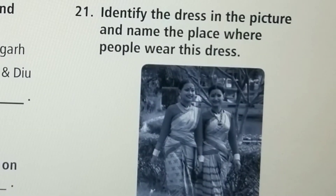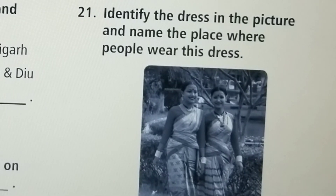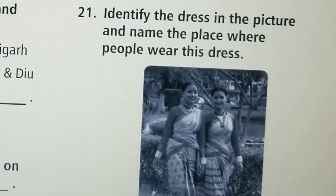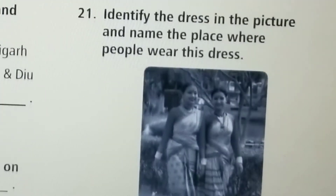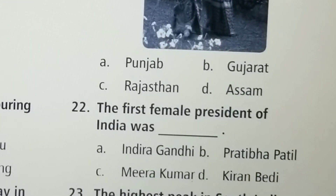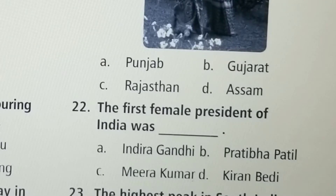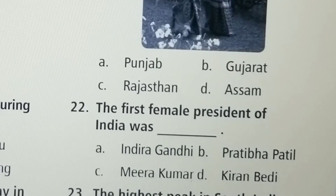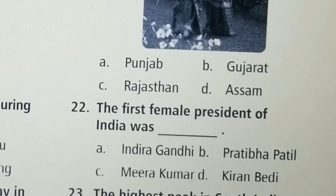Next question: Identify the dress in the picture and name the place where people wear this dress. Option A: Punjab, Option B: Gujarat, Option C: Rajasthan, Option D: Assam. Option D, Assam, is the correct answer.